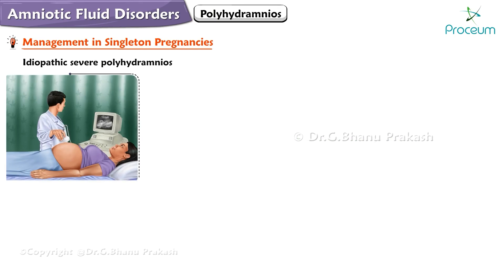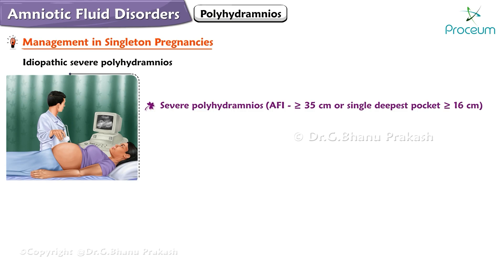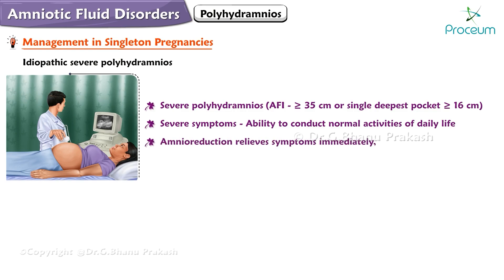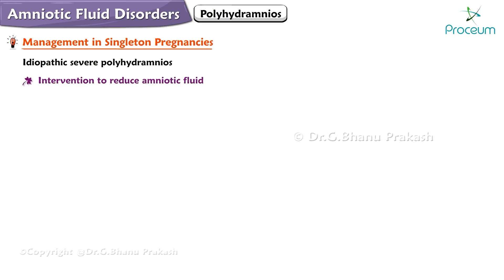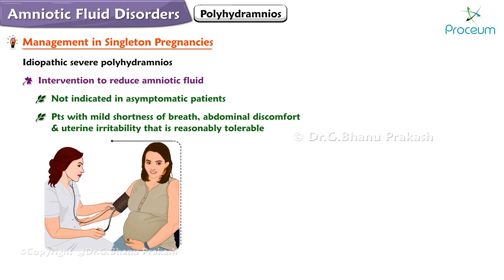Now we'll talk about the management of idiopathic severe polyhydramnios. Severe polyhydramnios is defined as an AFI greater than or equal to 35 centimeters or a single deepest pocket greater than or equal to 16 centimeters. Severe symptoms are defined as significantly interfering with the patient's ability to conduct normal activities of daily life. Amnioreduction relieves symptoms immediately, but amniotic fluid may reaccumulate within a few days to weeks. Intervention is not indicated in asymptomatic patients or those with mild shortness of breath, abdominal discomfort, or uterine irritability that is reasonably tolerable.